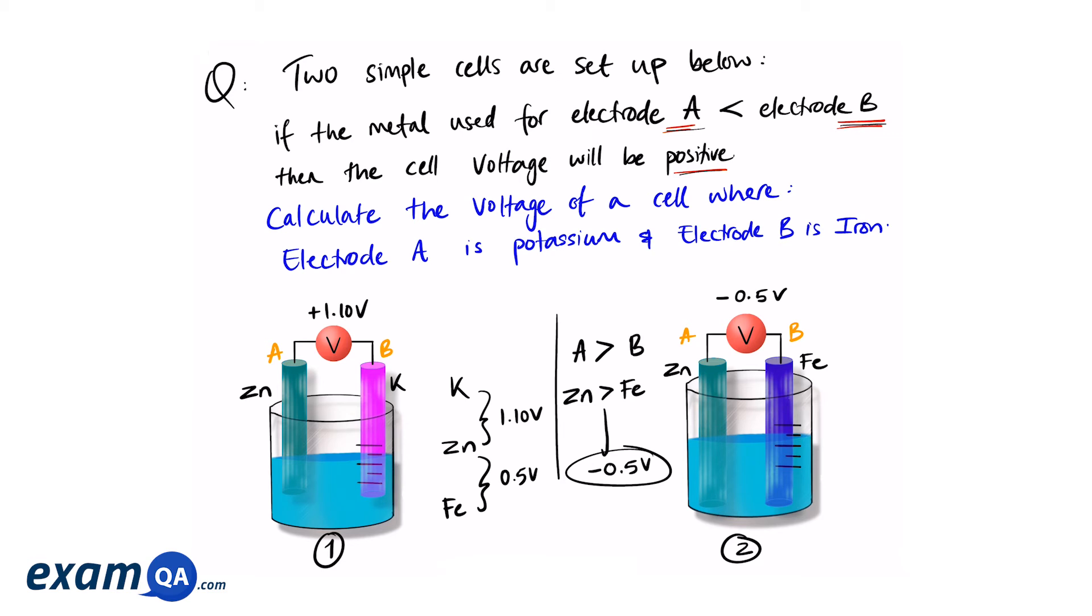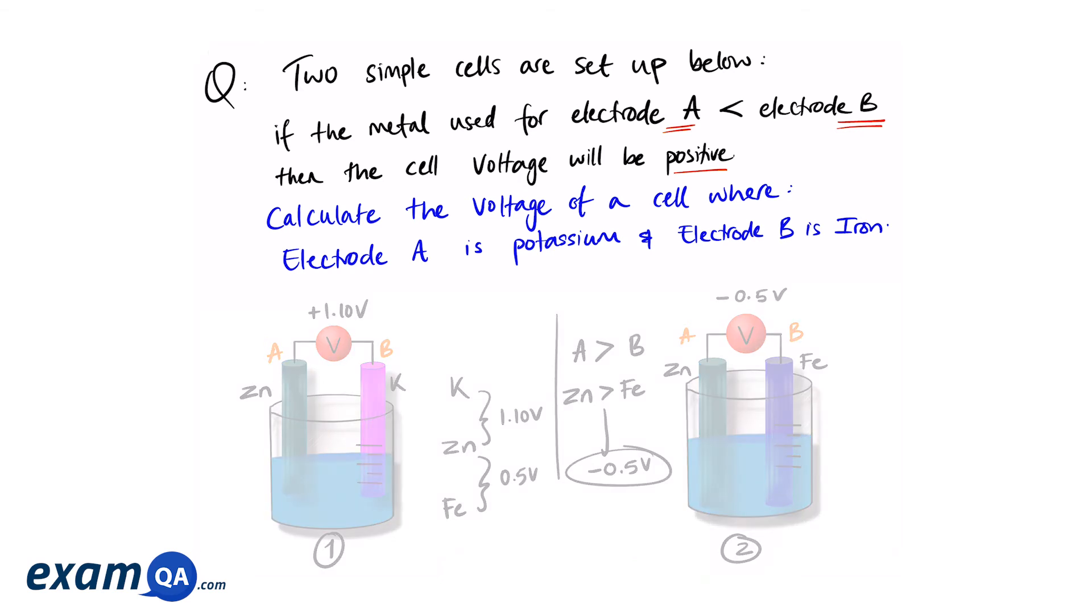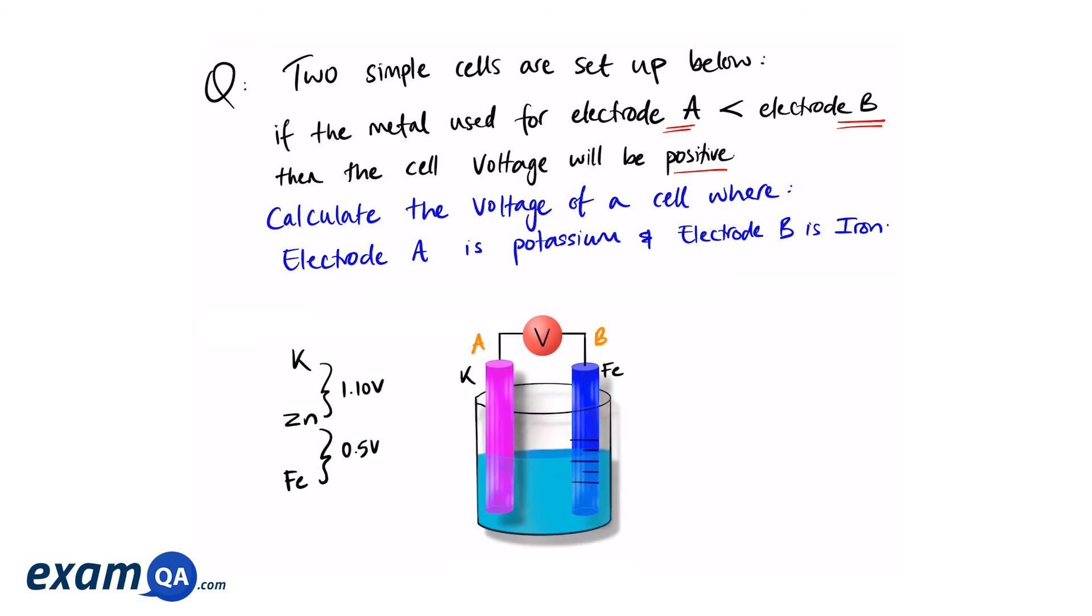So now looking at the question, calculate the voltage of a cell where electrode A is potassium and electrode B is iron. Now looking at our scale, we can see that potassium is at the top, so it's more reactive than iron. Since potassium is more reactive than iron, and we said that electrode A is going to be potassium and electrode B is going to be iron, therefore A is more reactive than B. Going back to the question, if A is more reactive than B, it will give us a negative voltage. So we already know that it's a negative voltage.